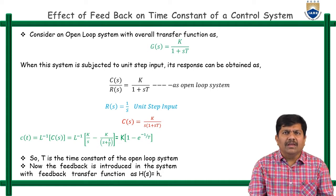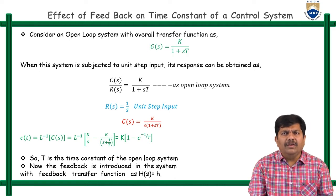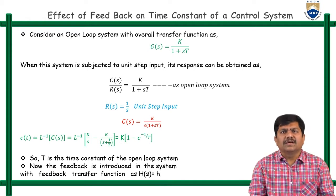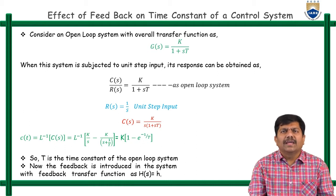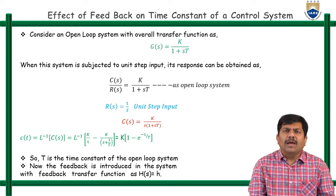Once the input is applied to the system, the system takes some amount of time to respond — that is the time constant. For a first order system, G(S) = K / (1 + ST), where K is the gain and T is the time constant. When this is subjected to a step input, the Laplace transform of the step input is R(S) = 1/S.